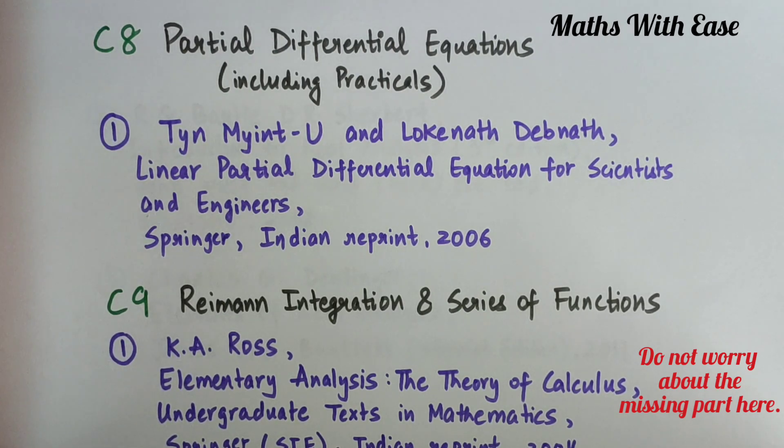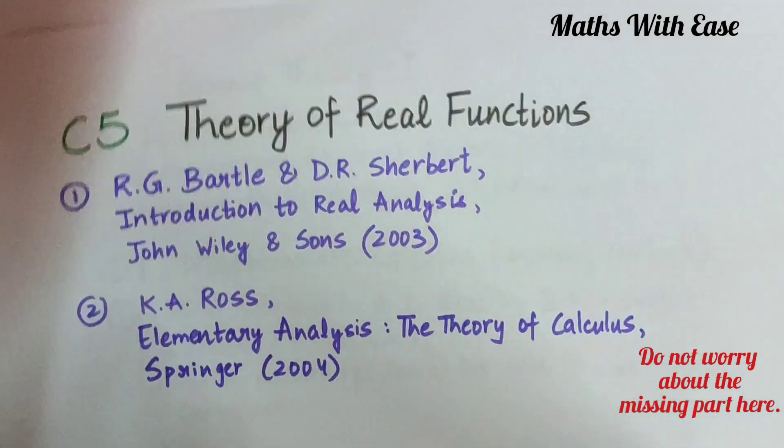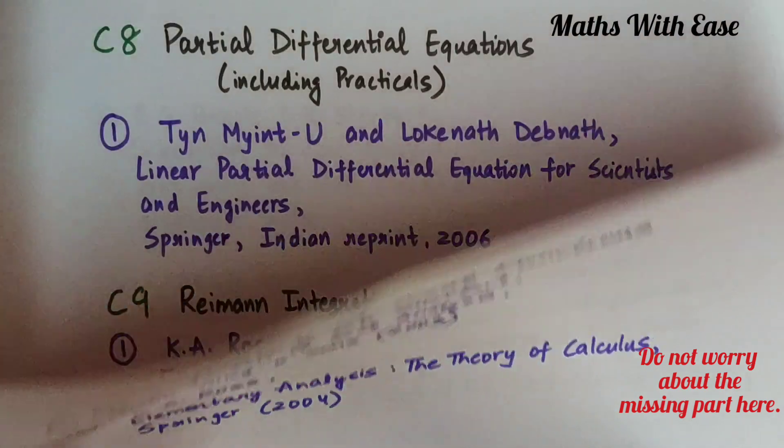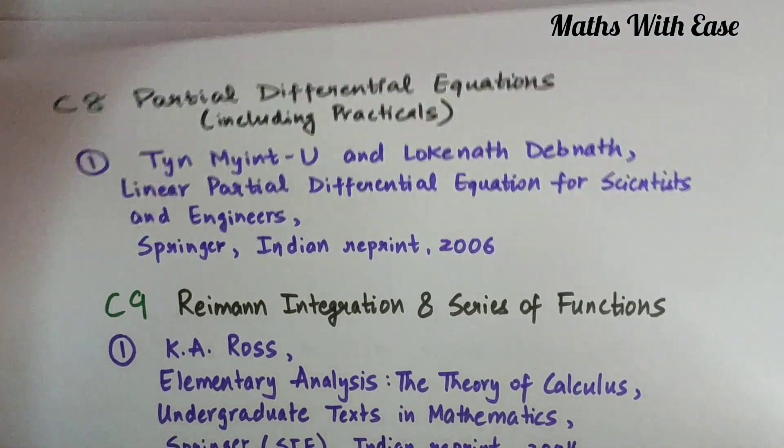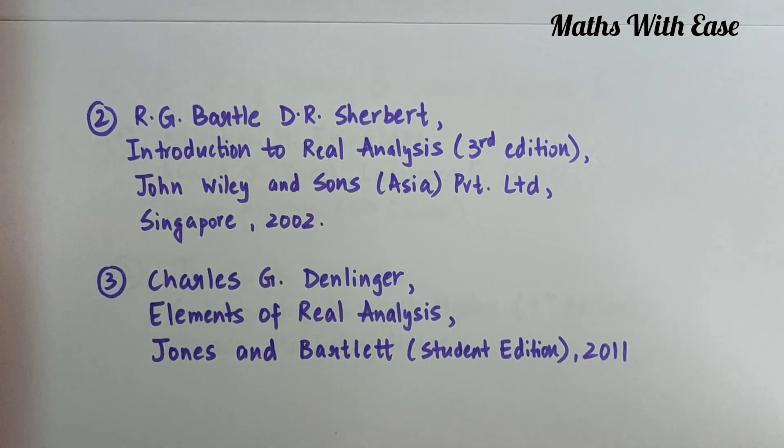Coming to C9 which is Riemann Integration and Series of Functions. For this subject, we have three books. The very first is K.A. Ross, Elementary Analysis, The Theory of Calculus, Undergraduate Text in Mathematics. This is the same book that we are going to study for Theory of Real Functions. Coming to the second book, it is R.G. Bartle, D.R. Sherbert, Introduction to Real Analysis, 3rd edition.